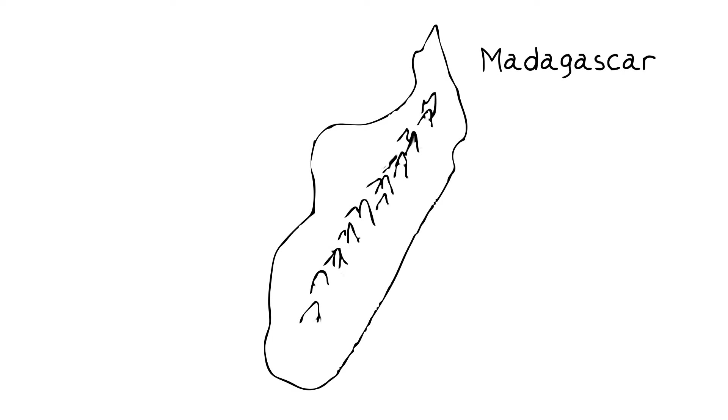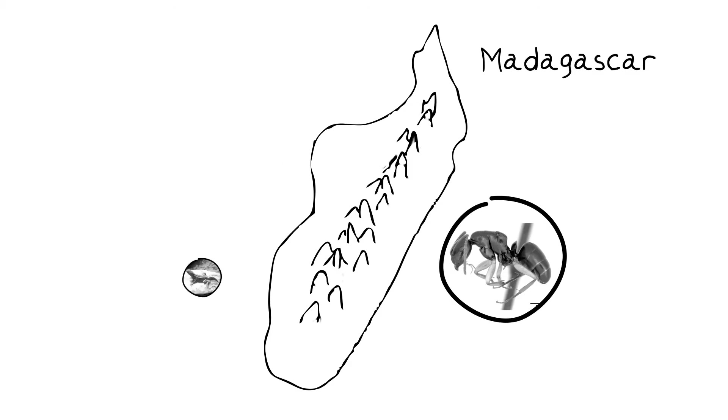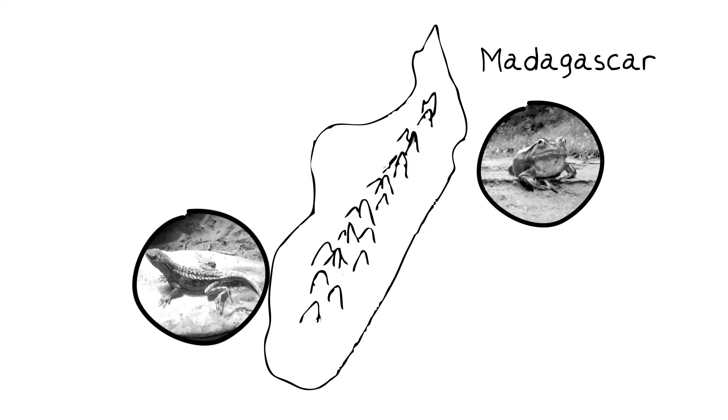But remember that on a big island like Madagascar, we have the habitat factor too. Populations can disperse on the island itself, find new habitats, encounter new barriers, and all kinds of new species can arise. And if you look at what's going on in Madagascar, that's definitely true.